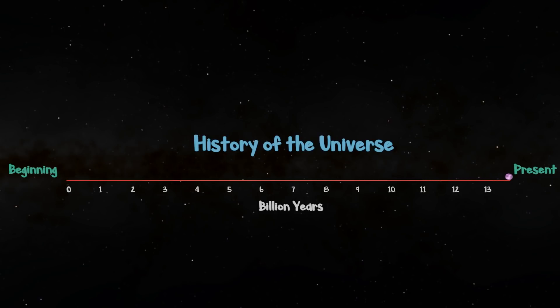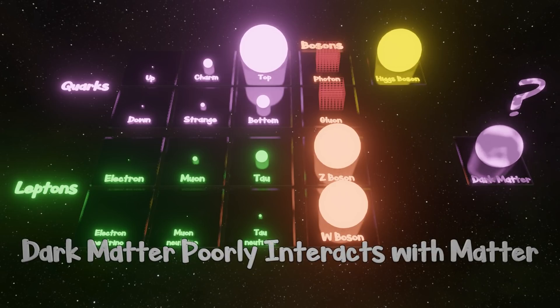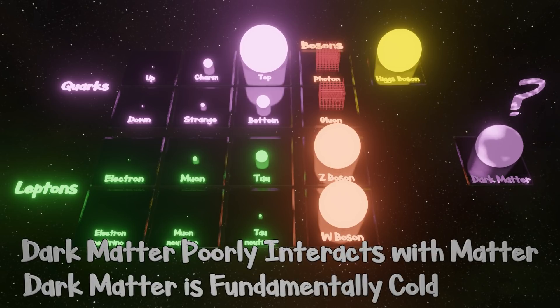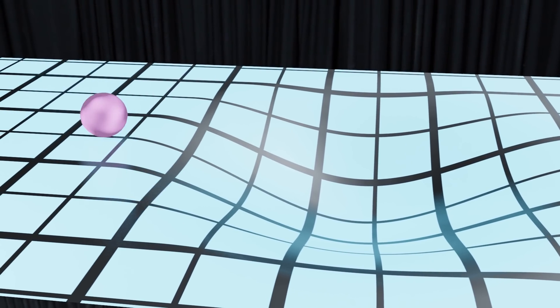Those are the only two things we can be almost certain of if dark matter is in fact a quantum object. It doesn't interact with or want to interact with anything, and it's fundamentally cold, thus its only motion is due to relativity and gravity. How would we discover it then?